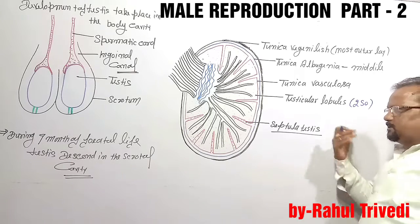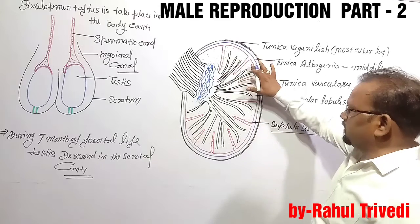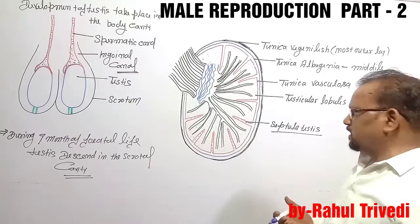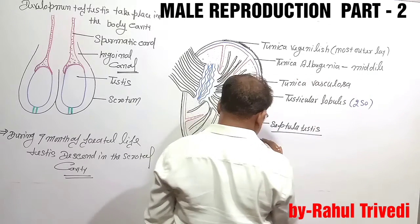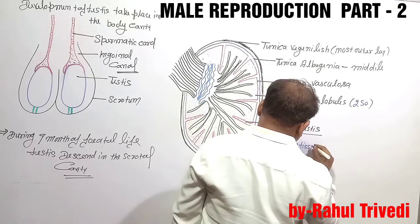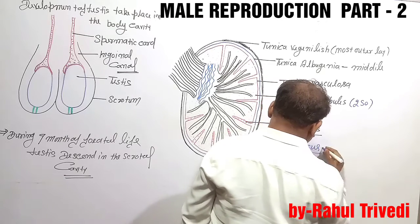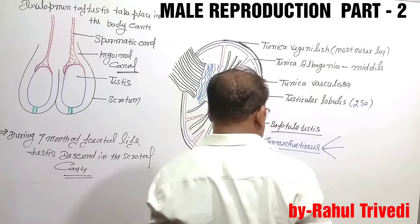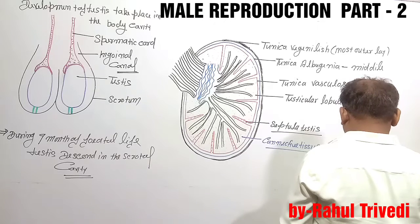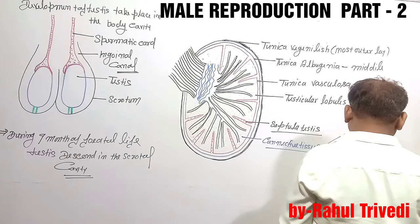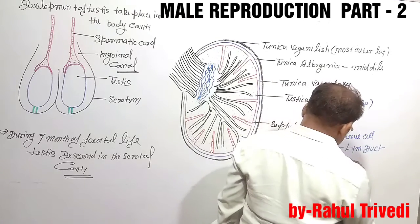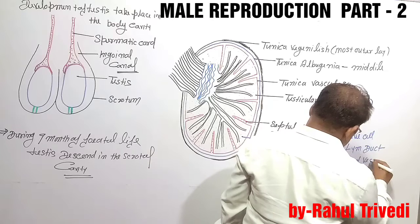The basic part of the testis — shown here in green color — is the stroma, where connective tissue is filled. Wherever connective tissue is present, you should remember that nerve cells, lymphatic ducts, and blood vessels are also present there.